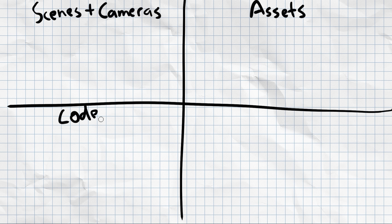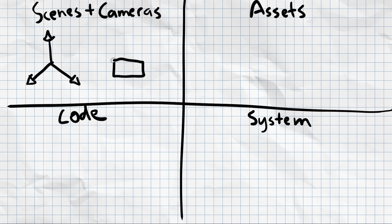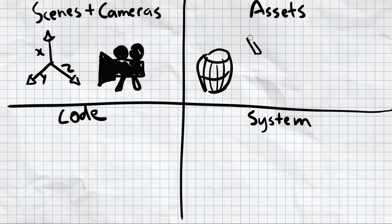I've been able to sort of dumb it down to four categories: Scenes and Cameras, Assets, Code, and then the System. So the scene or the camera, that's basically how you play the game and that's the playground that the game is.